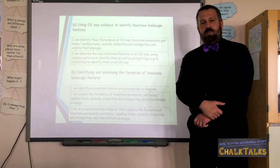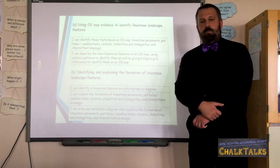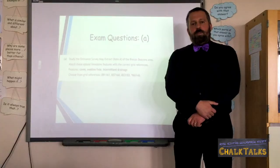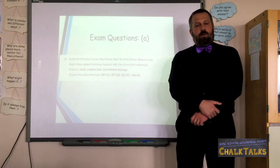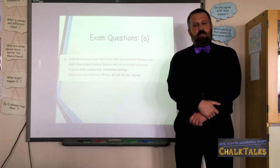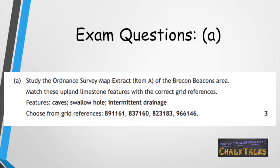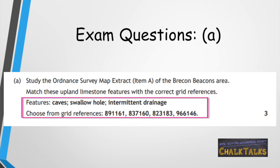Let's have a look at what some past exam questions have looked like for the upland limestone topic. There are two different possibilities for Part A. One is that the question will ask you to match six-figure grid references to limestone landscape features. This means that you will need to go to each six-figure grid reference in turn and check to see if any of the landscape features are there. You'll notice that there are three landscape features but four six-figure grid references, meaning that one of the grid references will be for a location on the map that does not include any of the landscape features.